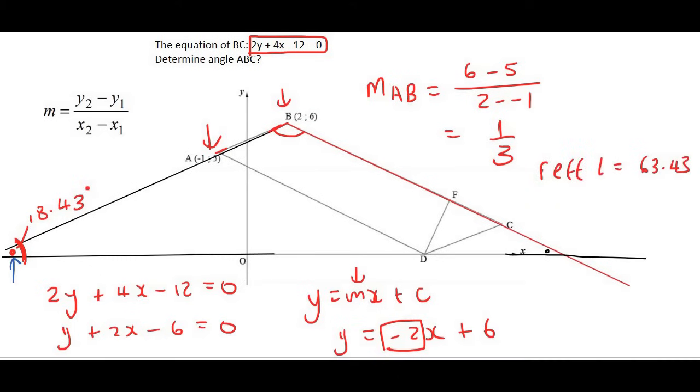63.43. Now that could either be this angle or it's this angle. Now clearly, an angle of 63 is the smaller one. If it was this larger one here, it would be more than 90. So that means that this little angle is 63.43 degrees.